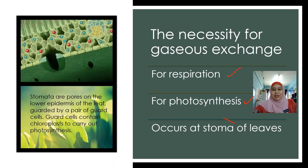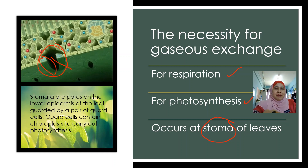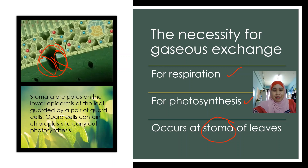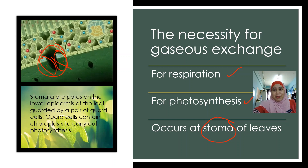Gaseous exchange occurs at the stoma of a leaf. The picture shows the stoma of a leaf. Stoma is the opening which is guarded by one pair of guard cells. Stomata are found on the lower epidermis of the leaf, especially for terrestrial plants. Guard cells contain chloroplasts, so guard cells are able to carry out photosynthesis.